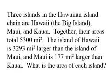Three islands in the Hawaiian island chain are Hawaii, the Big Island, Maui, and Kauai. Together, their areas total 5,300 square miles. The island of Hawaii is 3,293 square miles larger than the island of Maui, and Maui is 177 square miles larger than Kauai. What is the area of each island?